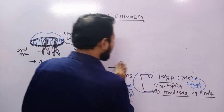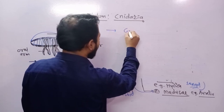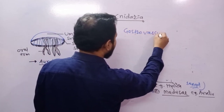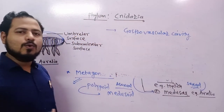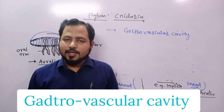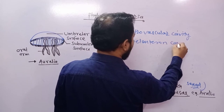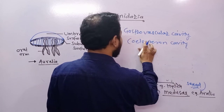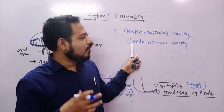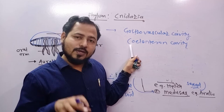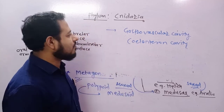These animals show a cavity in the body called the gastrovascular cavity, also previously called the coelenteron cavity. This cavity is concerned with digestion, absorption, circulation, and related functions. That is why these animals were previously called coelenterates.